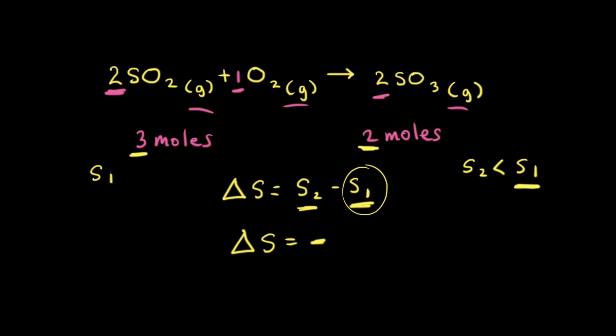As a quick summary, when trying to figure out the change in entropy, we need to consider the number of available microstates. If the number of available microstates increases, then the change in entropy is positive. If the number of available microstates decreases, then the change in entropy is negative.